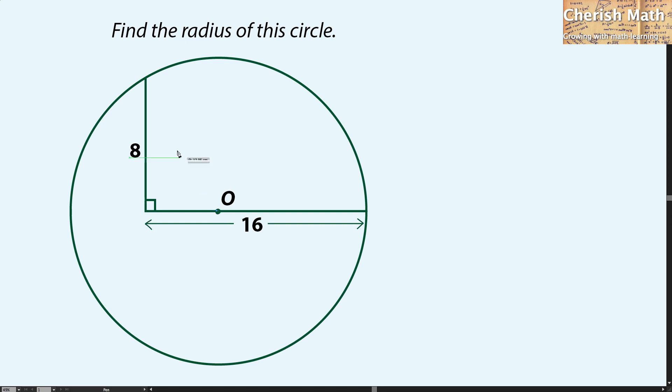I'm going to make a line connecting from the center of the circle. And this is the radius that I'm going to denote with letter R.